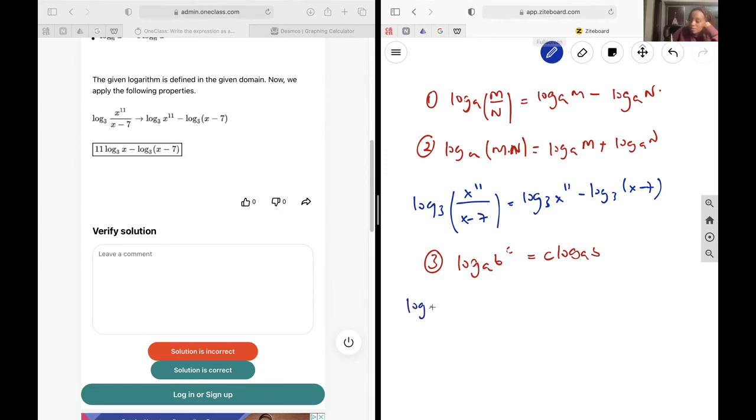And so we'll get that log base 3 of x to the power of 11 minus log base 3 of x minus 7 is going to give us 11 log base 3 of x minus log base 3 of x minus 7.